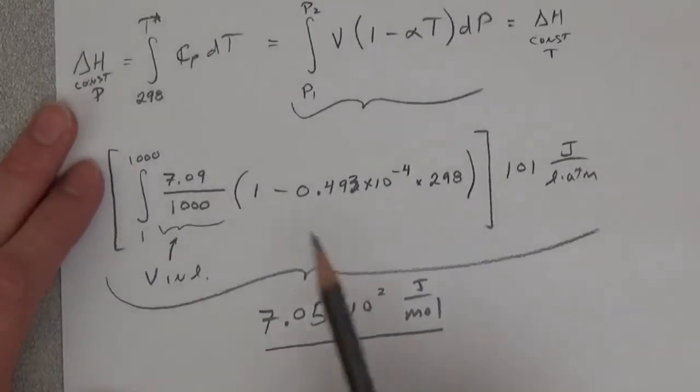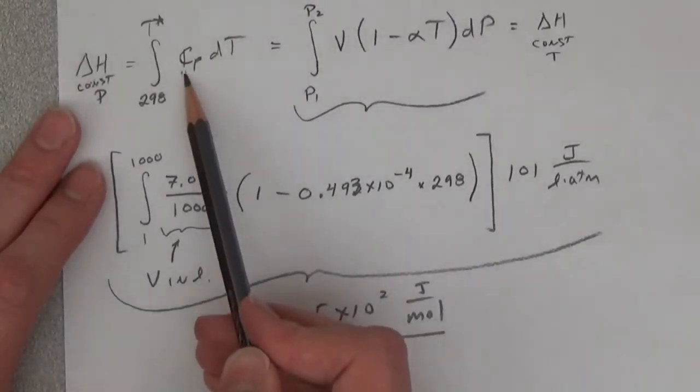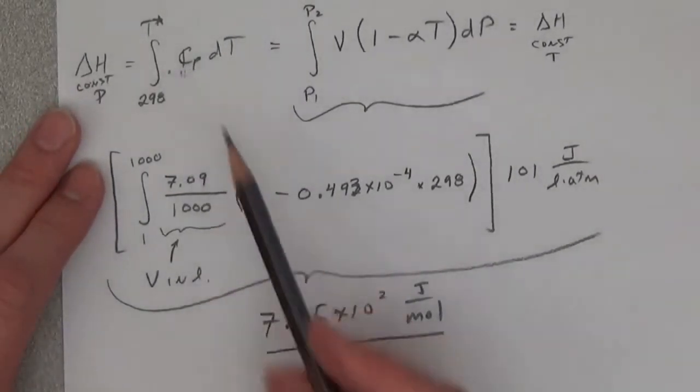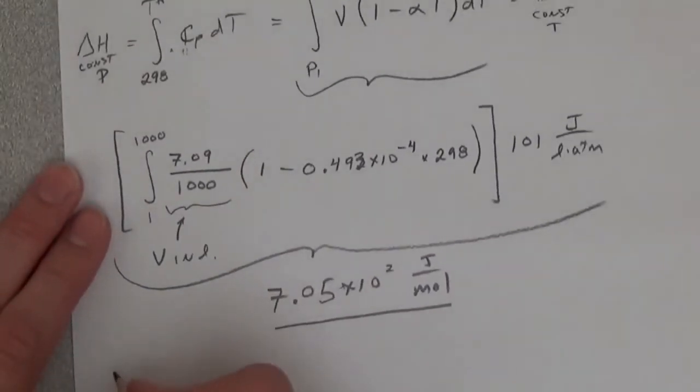Okay, so then going back and setting these equal, we get 7.05 equals the integral from 298 to T star.